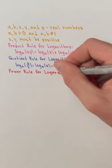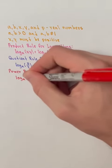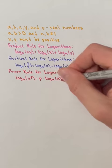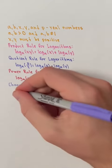The power rule for logarithms states that the log base a of x to the power of p is equal to p times the log base a of x.